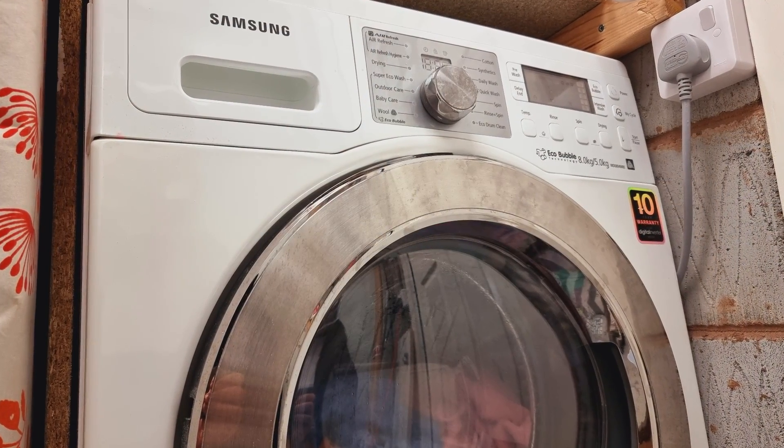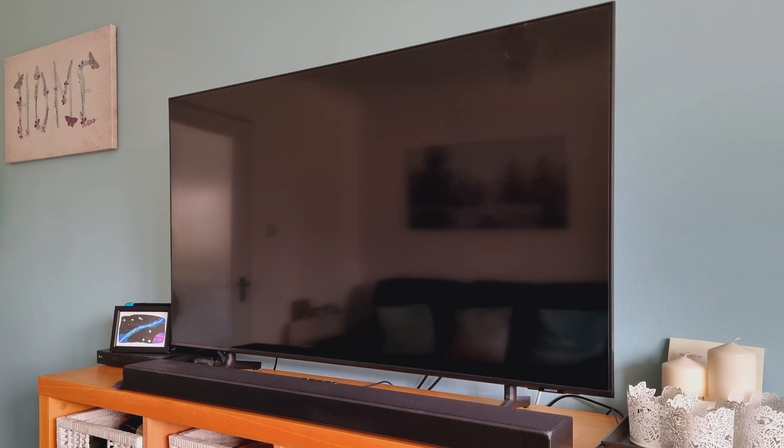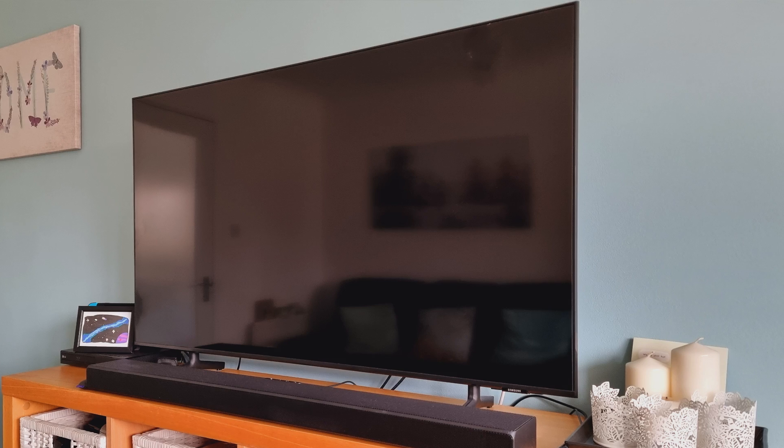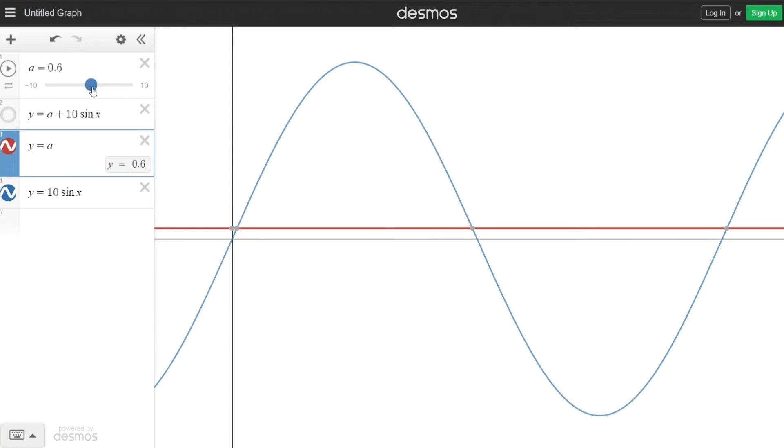However, modern loads that we connect to our circuits, such as washing machines, dishwashers, IT and entertainment equipment, all leak DC back into the AC system. We can illustrate this using this lovely graphing software from Desmos. Here we have a healthy AC waveform and here we can see what a DC waveform looks like, just a straight flat waveform.